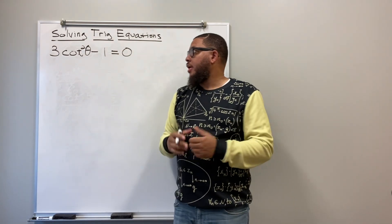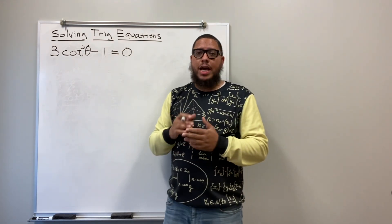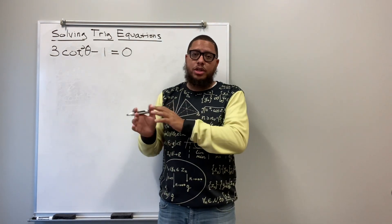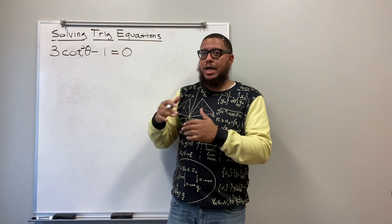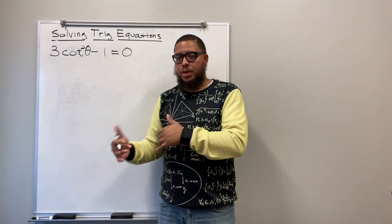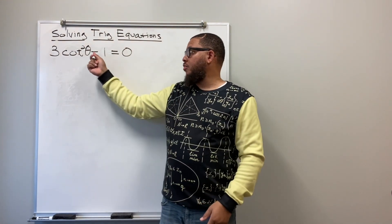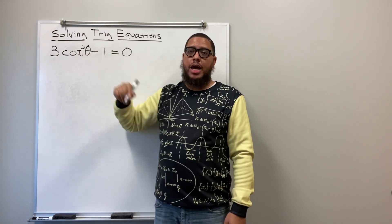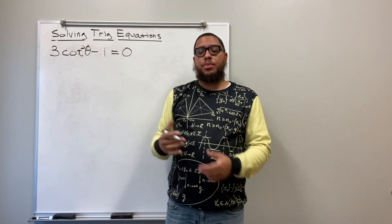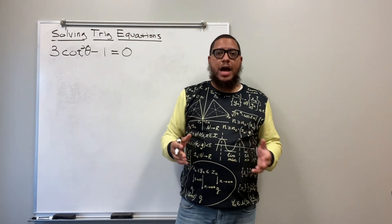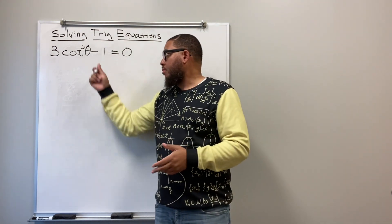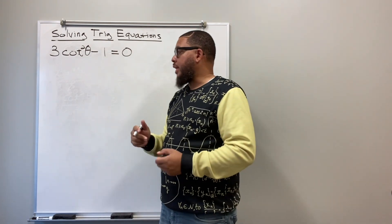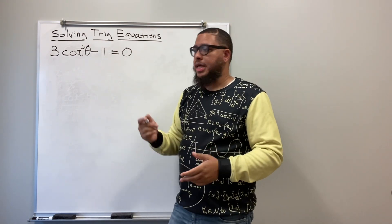Now we have something to solve for. I'm trying to isolate theta on the left side of the equation. Theta is already on the left side, but it has some friends we need to get rid of: the negative one, the three, the exponent two, and the cotangent. We do inverse operations. First, I want to get rid of the negative one by adding one.